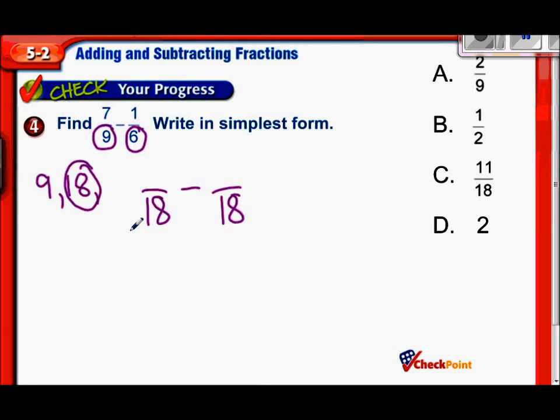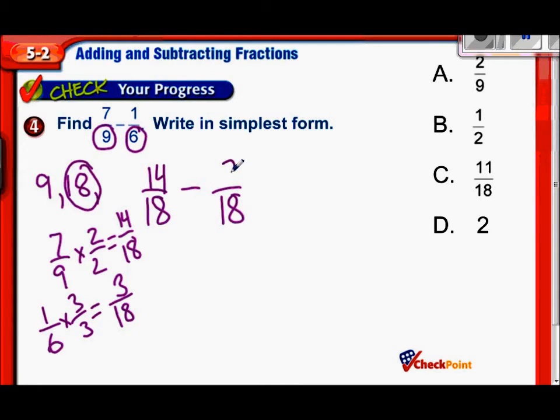So if we're going to make ninths into 18ths, we have to multiply by two. So that would be 14 over 18. In the case of one-sixth, if I want to make sixths into 18ths, I want to multiply by three. Three-thirds. So one times three is three. So one-sixth would be three-eighteenths. Now we subtract 14 minus three is 11 over 18. Last thing you want to check is, can that be simplified? And now 11 and 18 have no common factors, and it's already simplified.